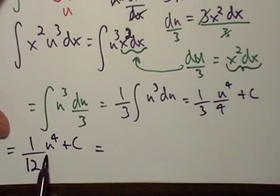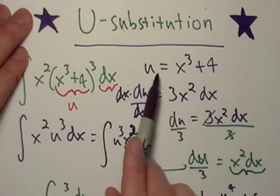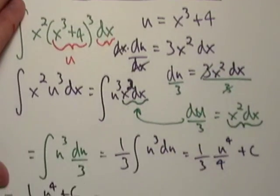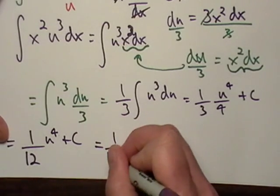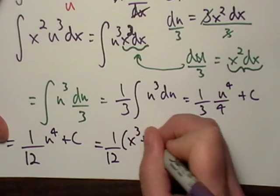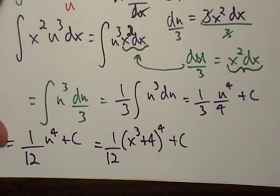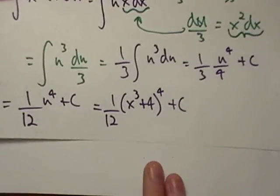Okay, we're really not done yet. This is in terms of u. Okay, we want this to be in the terms of our original answer. Well, we said u is equal to x to the third plus four. So let's just go ahead and say that. Let's say one twelfth x to the three plus four all raised to the fourth plus c. Okay, so that is the anti-derivative right there.